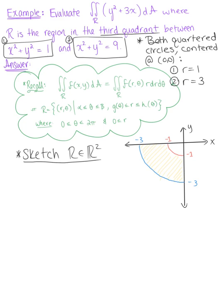Any time you have a region of integration that is a circle or a portion of a circle, it's going to be more convenient to use polar coordinates. So just by looking at the circle, we can go right ahead and identify the bounds.